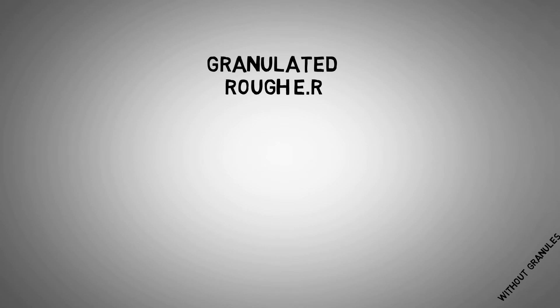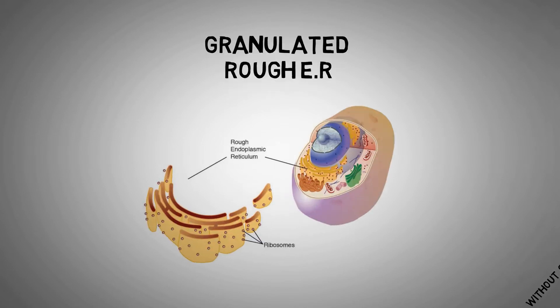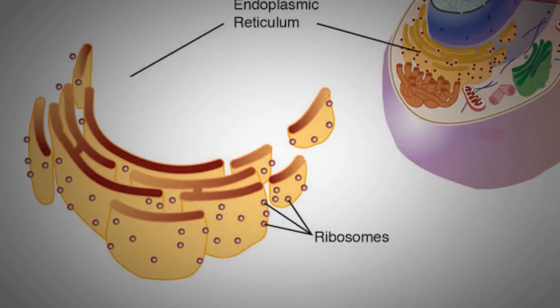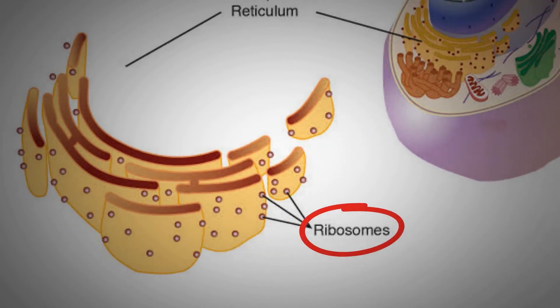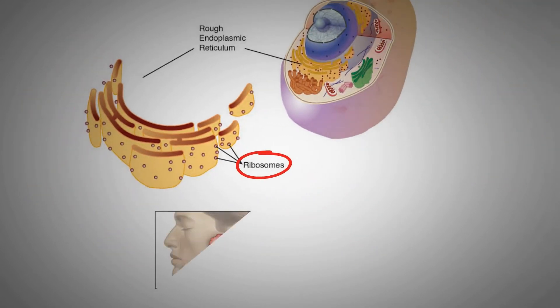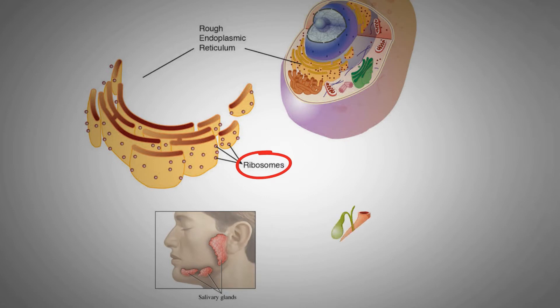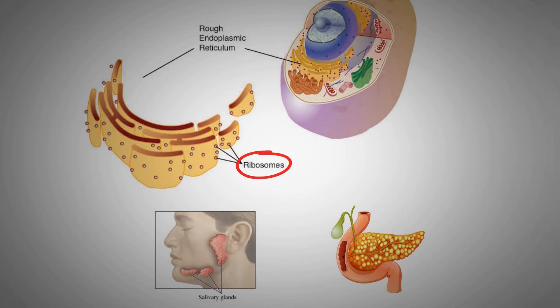On the other hand, rough endoplasmic reticulum is heavily associated with ribosomes on its outer surface. Rough endoplasmic reticulum occurs mostly in protein-synthesizing cells such as mammalian salivary glands and pancreas.